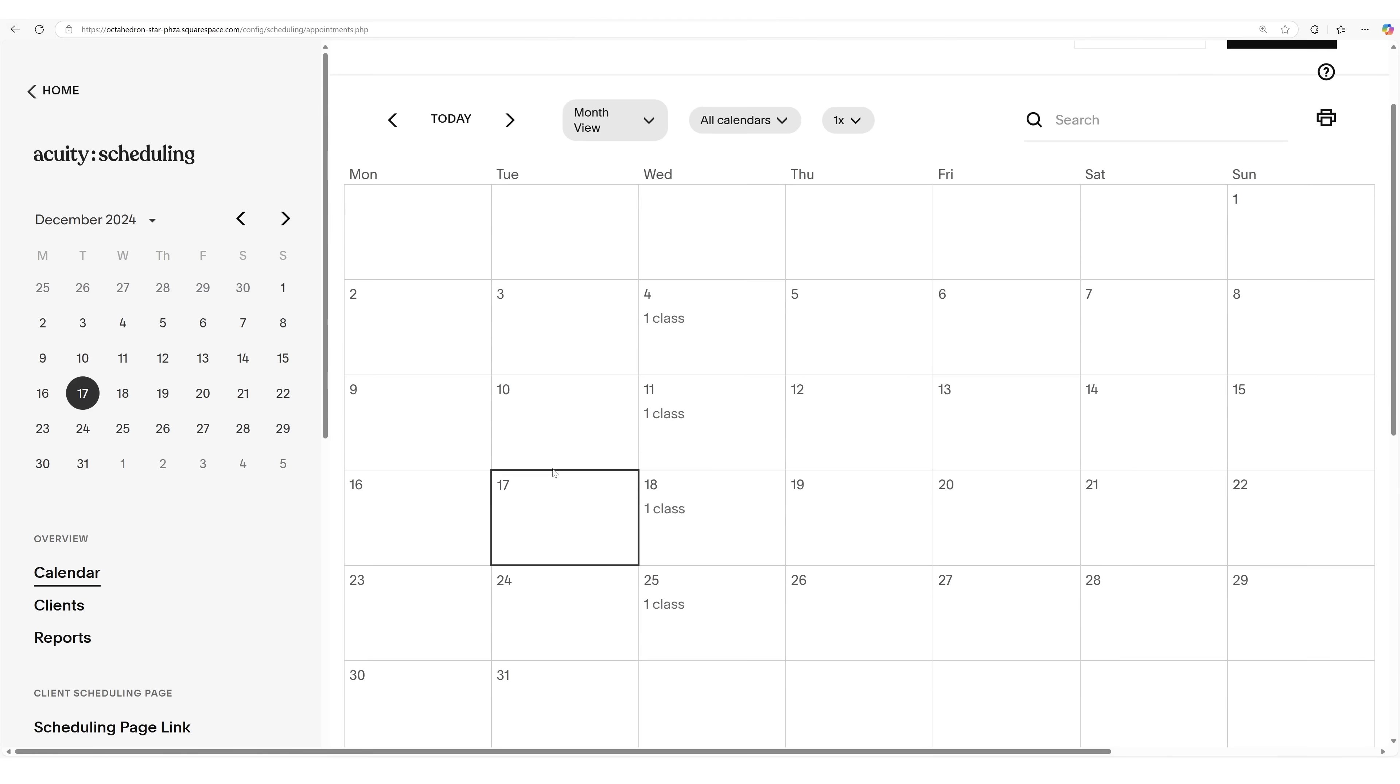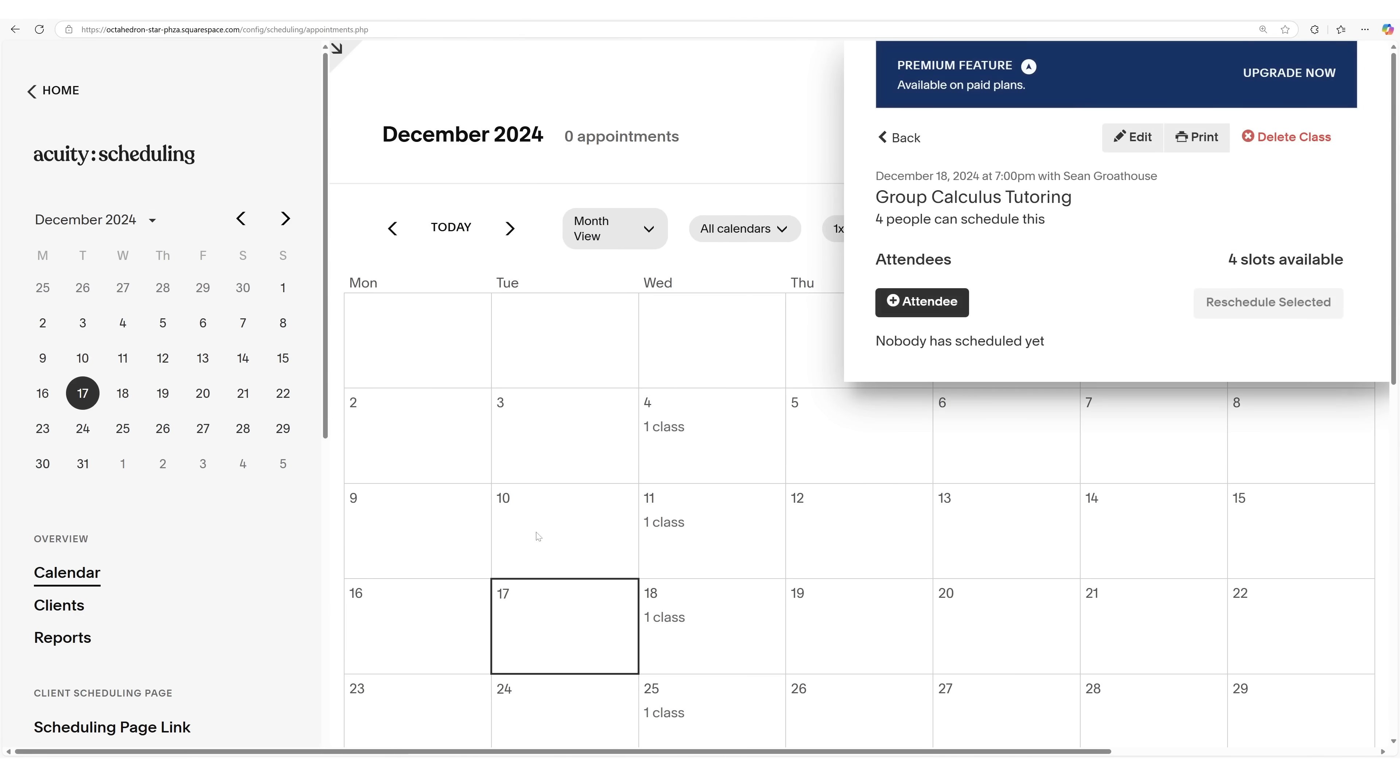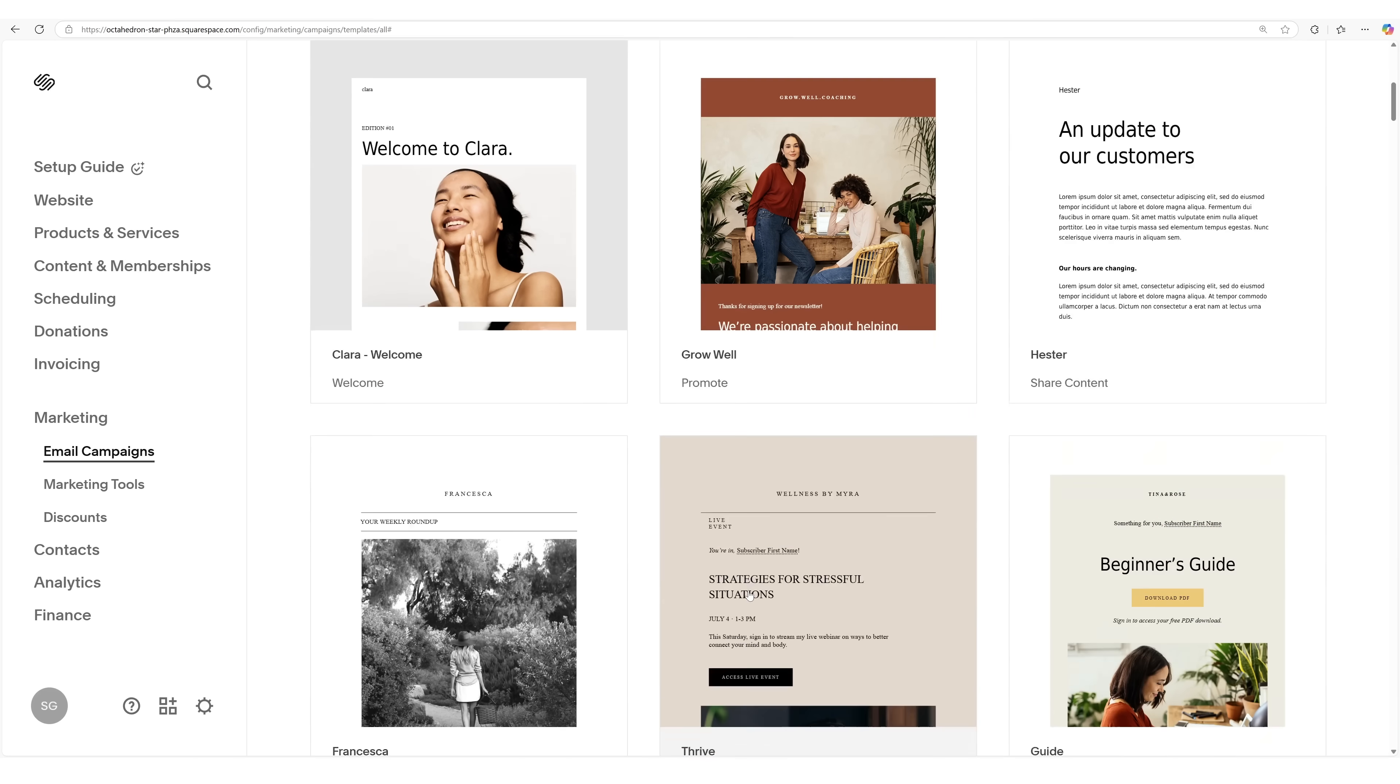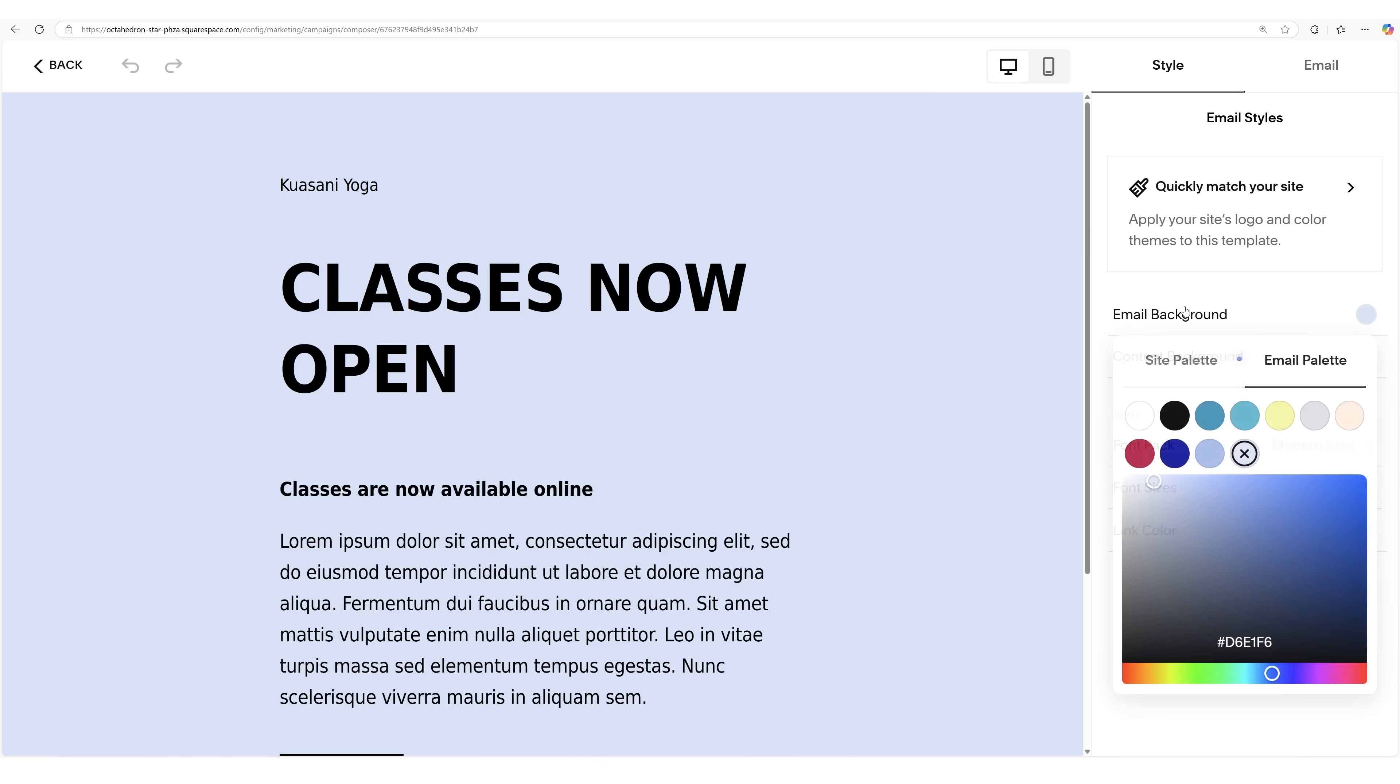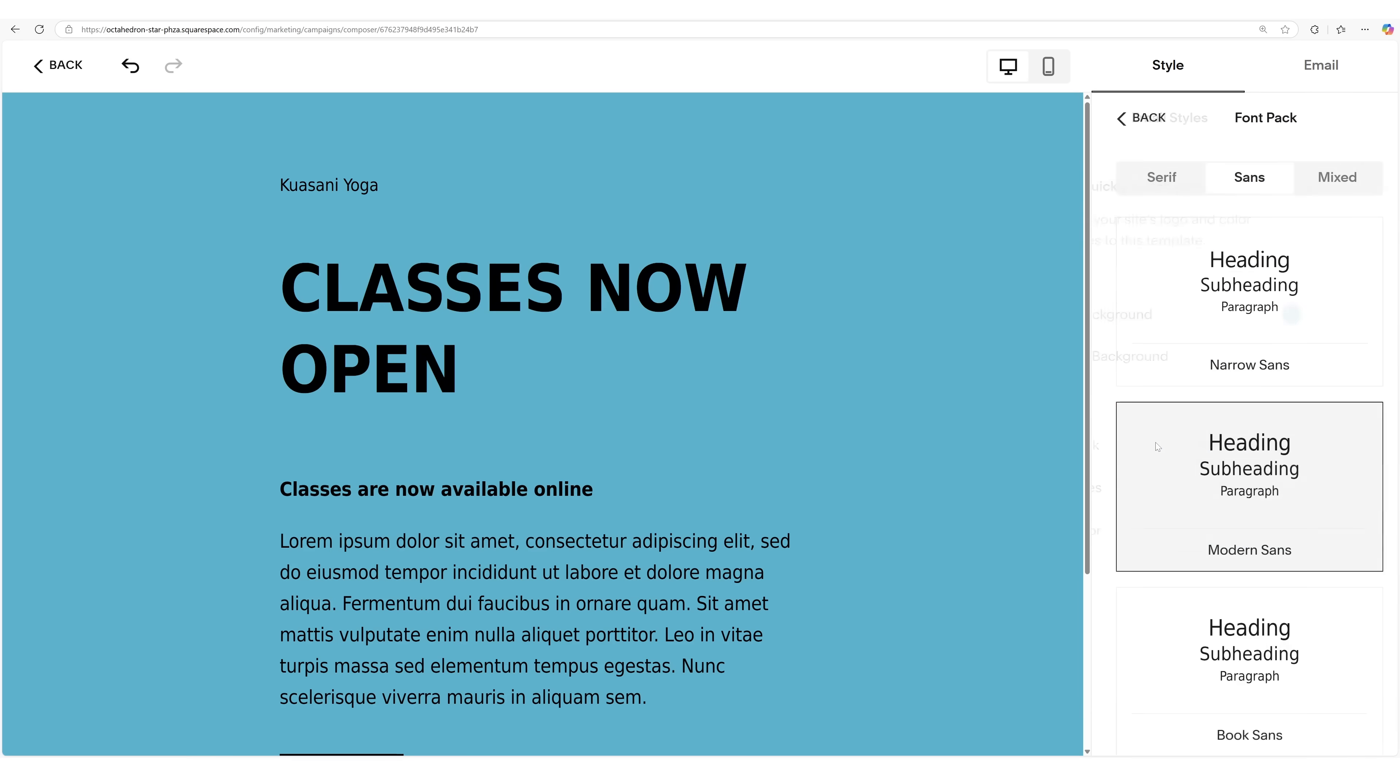Do you schedule clients for consulting or tutoring? Squarespace's acuity scheduling makes it easy to manage your appointments, accept payments, and send automated reminders all in one place. And with Squarespace's email campaigns, you can easily connect with your clients to send promotions or updates. Squarespace handles all the technical details so you can focus on your content.